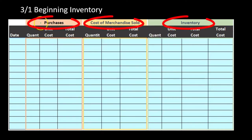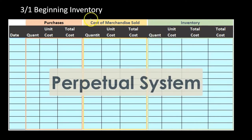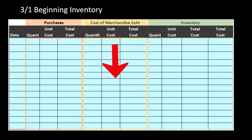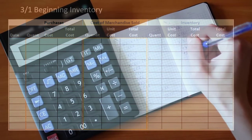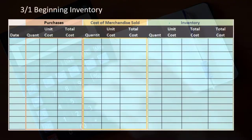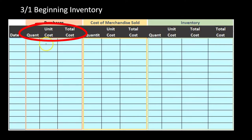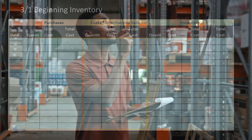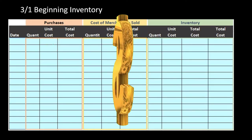The worksheet has three columns or sections: purchases, cost of merchandise sold, and inventory. In a periodic system, we don't really need the middle section until the end when we do the final calculation. Throughout the time period we just record purchases and track what is still in ending inventory, including what was there before plus the purchases.